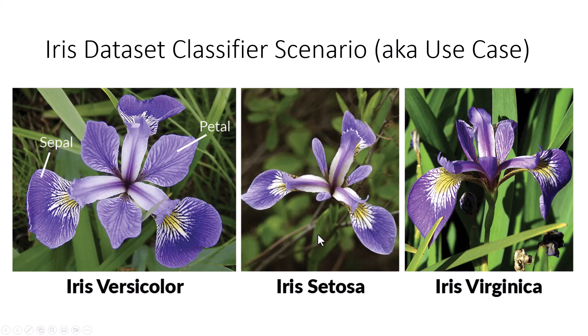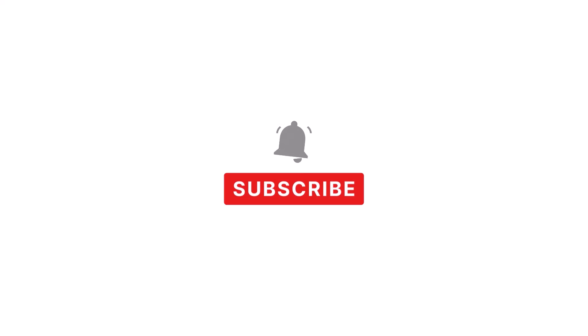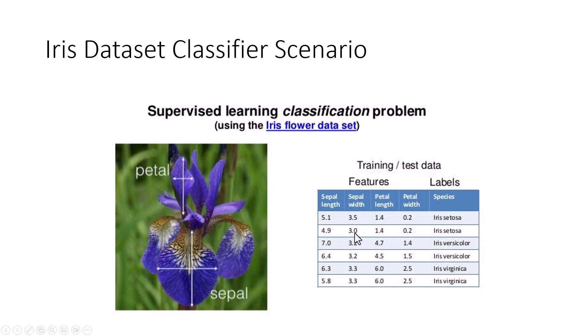In SAP AI Core, a scenario is your ML use case, so you can give some meaningful name to your use case. In our example, we are going to look at a classic supervised classification problem. Fisher, in the year 1936, collected measurements for three different types of iris flowers: the versicolor, setosa, and virginica. We are going to train our model to accurately predict the type of flower based on any kind of measurements. There are four different features of the flower and the actual label itself — about 150 rows that Fisher collected samples on.